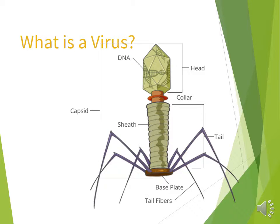So now we're moving to viruses. This virus here is a bacteriophage, so it will attack bacteria. It has DNA in what's called the head. There's a collar, a sheath, a tail — which is the long thing we also call a sheath — a base plate at the bottom, tail fibers, and then this whole thing from top to bottom is called a capsid. It's kind of sci-fi looking but they're really cool.